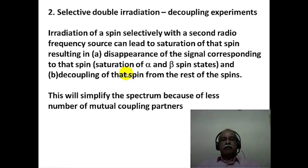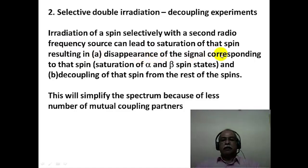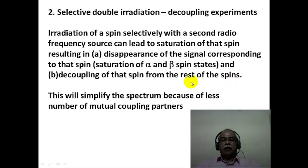The second technique involves selective irradiation or the decoupling experiment. Irradiation of a particular spin using a second radiofrequency source saturates that spin — the population between alpha and beta states becomes equal, differing from equilibrium. This causes two things: the signal of that spin disappears due to saturation, and that spin decouples from the rest of the mutually coupled system. As a result, the spectrum simplifies with fewer coupling partners.